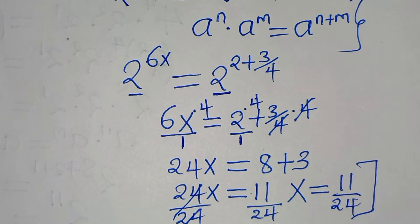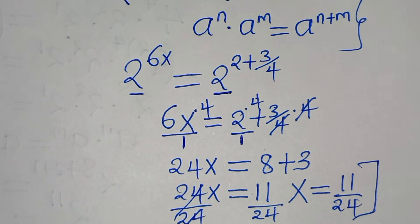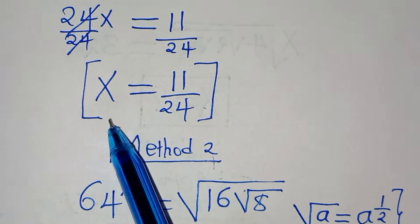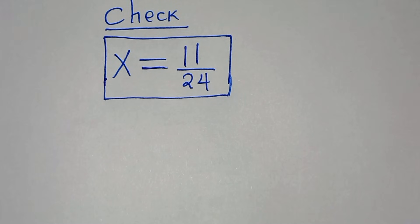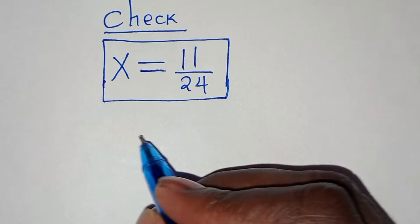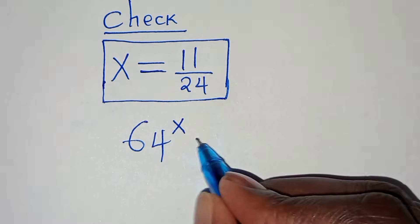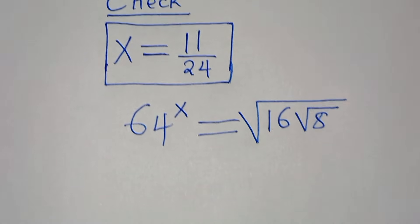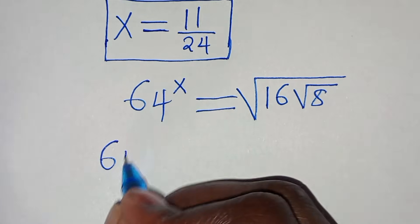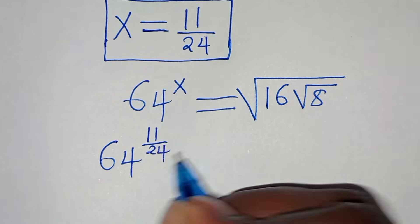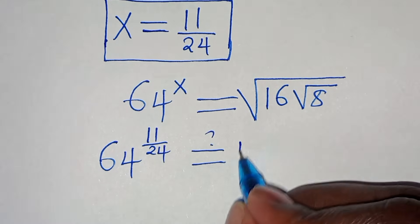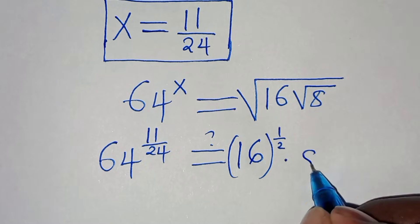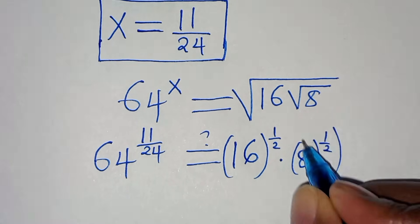Both Method 1 and Method 2 give the same value of x, which is 11 over 24. Now let's verify that this value satisfies the equation. Substituting x equals 11 over 24 into 64 to the power of x gives 64 raised to the power of 11 over 24. The right side is 16 raised to the power of a half, multiplied by 8 raised to the power of a half, then raised to the power of a half.